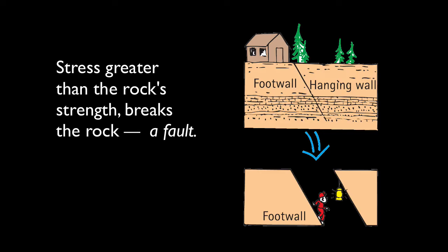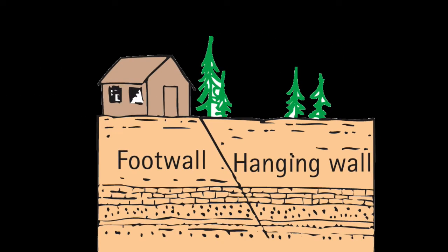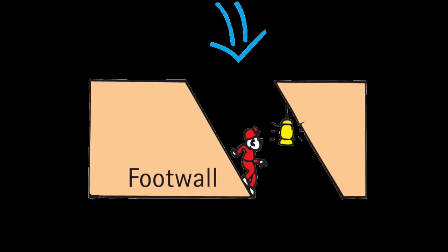The block of rock on one side of the fault has a different name than the other block. The terms footwall and hanging wall were used by miners because one could hang a lamp on a hanging wall and one could stand on a footwall.